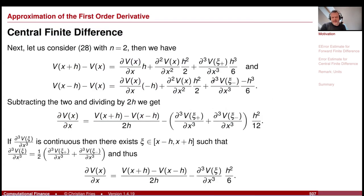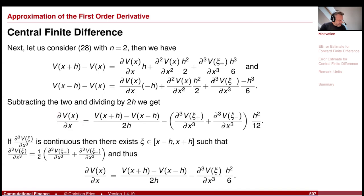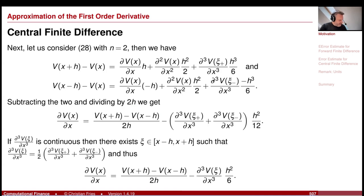We also derived the central finite difference using two shift sizes — upshift and downshift — and then we get the formula that our partial derivative is a finite difference with the upshift minus the downshift value divided by two times the shift size, plus another residual term.